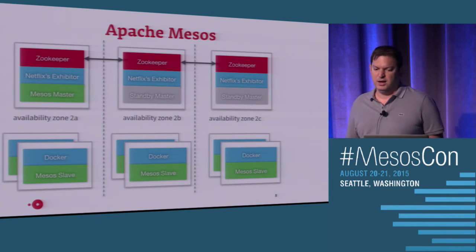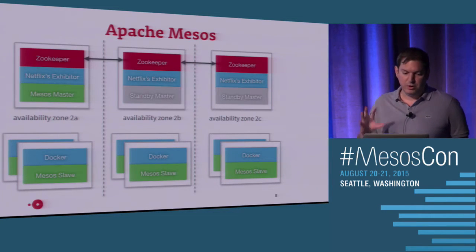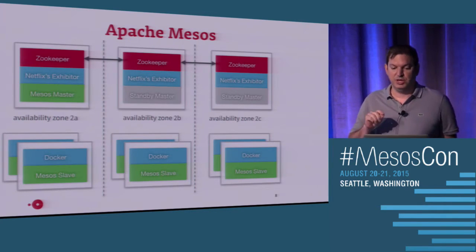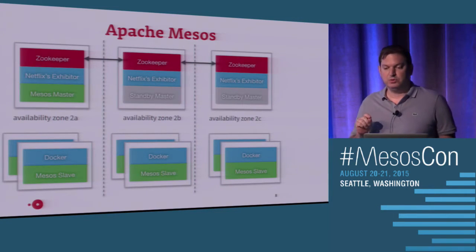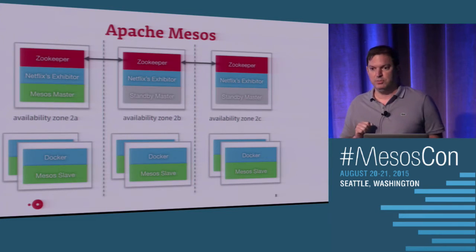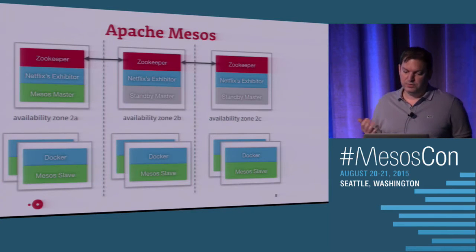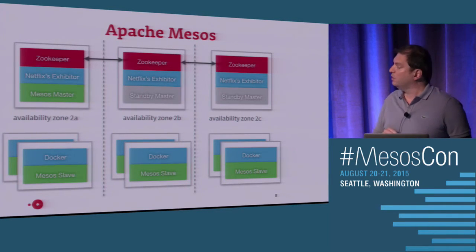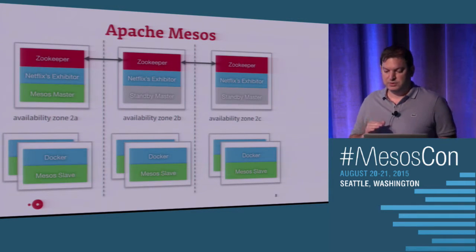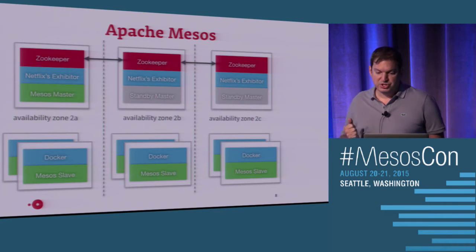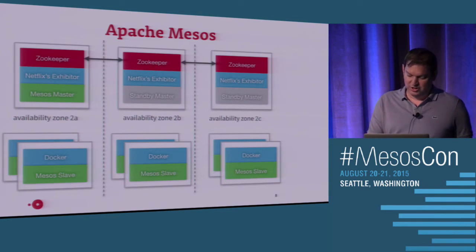The way we architected Mesos, we collocated the ZooKeepers with the masters. So we have three machines that are Mesos masters and ZooKeepers. We added a Netflix Exhibitor to every one of them to watchdog the ZooKeepers and handle some babysitting on the logs, so you can restart a ZooKeeper very easily. We also have several slaves, and the slaves are super pristine — they just have the Mesos agent and the Docker daemon.